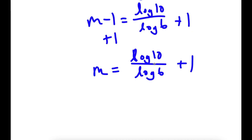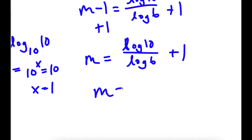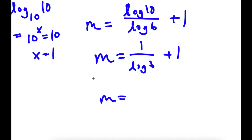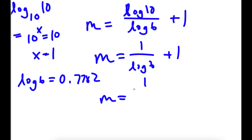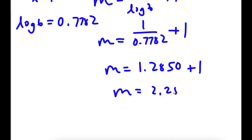Now log 10 is the same as log base 10 of 10, which is essentially asking 10 to the power of x is equal to 10. The only value of x has to be 1, because any number to the power of 1 is itself. So log 10 is equal to 1. So I have 1 over log 6 plus 1. The value of log 6 is approximately 0.7782. So now I have 1 over 0.7782 plus 1. 1 over 0.7782 is approximately 1.2850. So I have that plus 1, meaning m is equal to 2.2850.